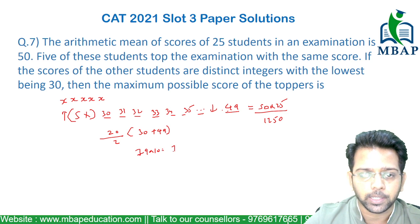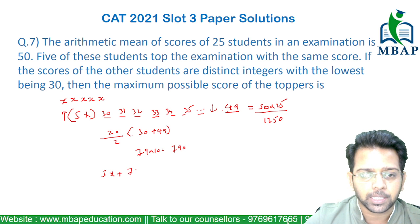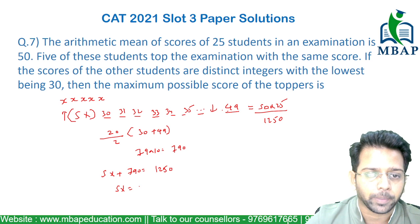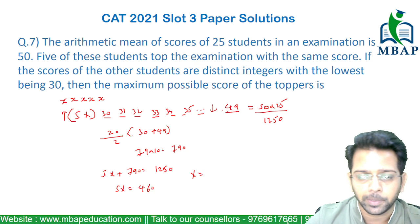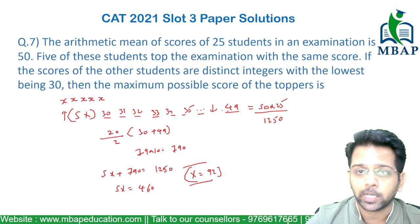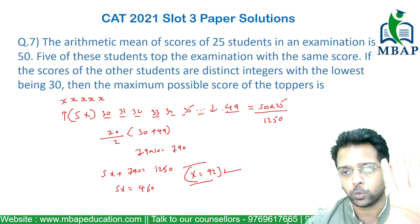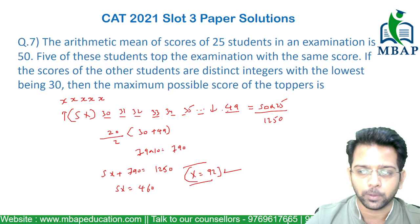So 5x + 790 = 1250, which gives 5x = 460, and therefore x = 92. Since all five top students share the same score, the maximum possible score is 92. Easy question — solved really well.